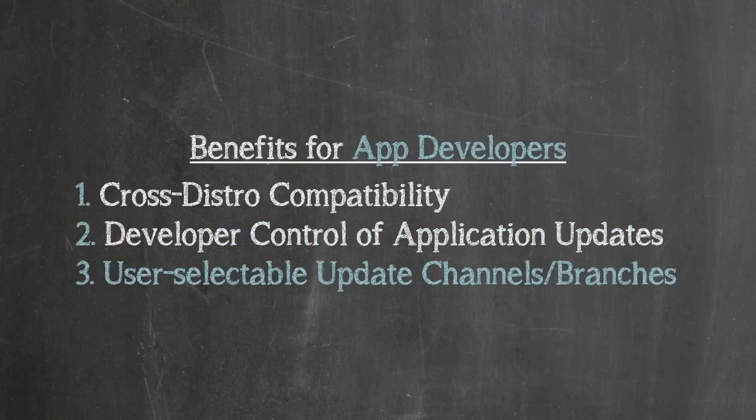App developers can create separate channels for different types of users within the same snap. Developers can release their software in a stable channel, a beta channel, and in nightly channels called edge. Users can select to use the most up-to-date version of the snap or only use stable releases. This is currently accomplished in Ubuntu with different PPAs for each branch, but snaps simplify it into just one snap.